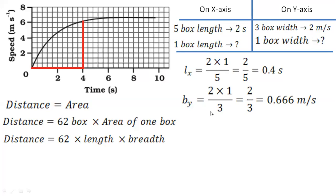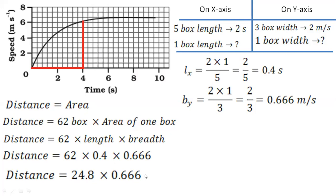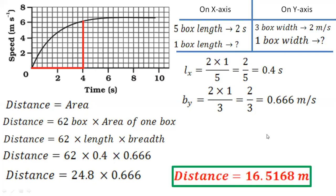Now with these values, all we have to do is put them in our actual formula. So it will become 62 into length 0.4 into breadth 0.666. We multiply 62 and 0.4 first, which gives 24.8. Then 24.8 into 0.666, and the final answer would be 16.5168 meters.